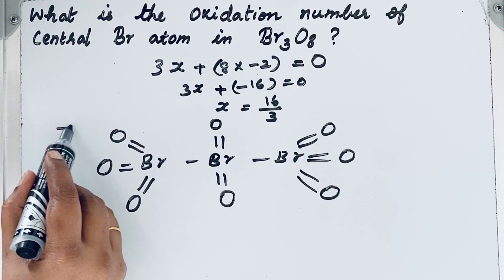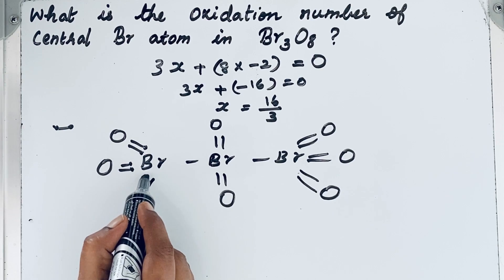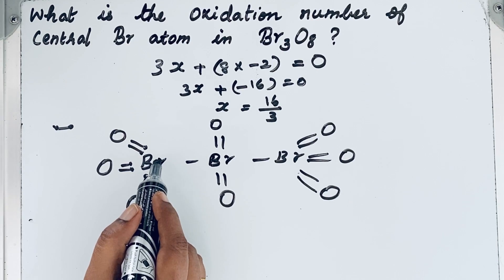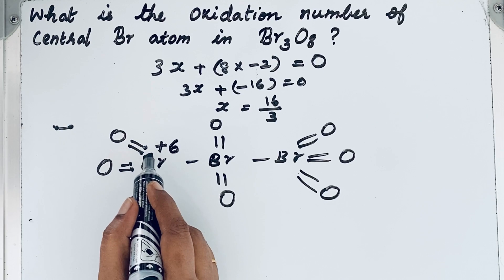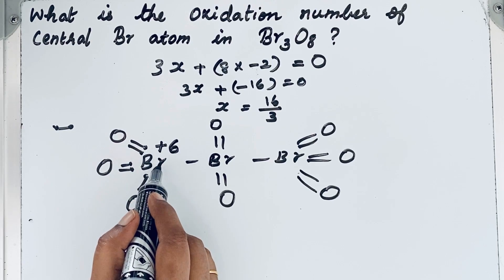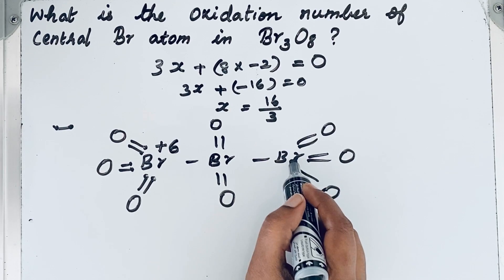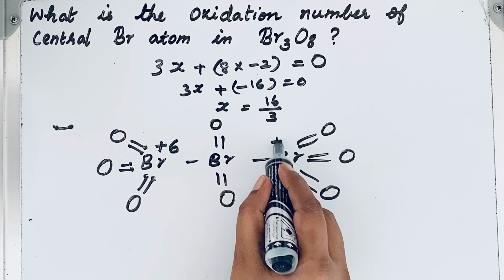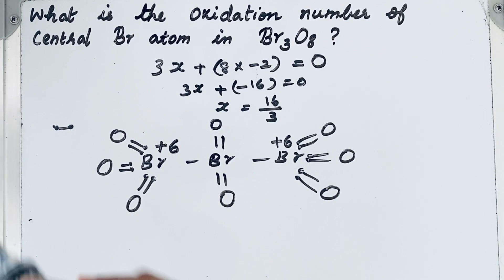One bond means two electrons, so three bonds to oxygen means six electrons are given by each terminal bromine atom to oxygen. Since those electrons are lost, the oxidation number is +6. The same applies to the other terminal bromine atom — it is also attached to three oxygen atoms, giving six electrons to oxygen, so its oxidation number is also +6.